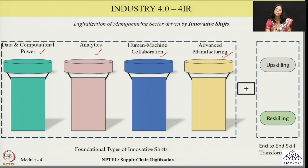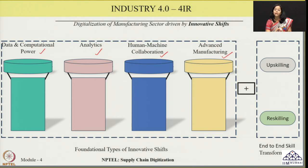We see that there are certain innovative shifts that have been appropriately applied in the manufacturing environment — starting from capturing of data, improving computational power, analyzing the data and taking proper decisions based on that, the collaboration between human and machine, how automation can be managed, and how advanced technologies are being implemented. How do we apply these innovative shifts in the regular manufacturing environment? There are two ways — in terms of the skills required for managing these advancements, it is very important that companies try to understand the need for upskilling or reskilling to match the requirements of the innovative shifts and fulfill the objective of implementing digital transformation.